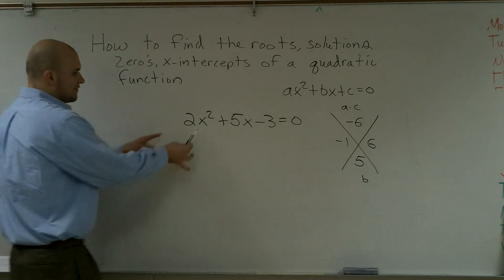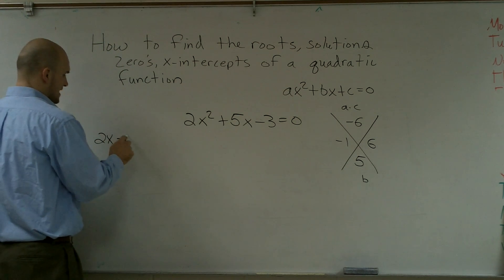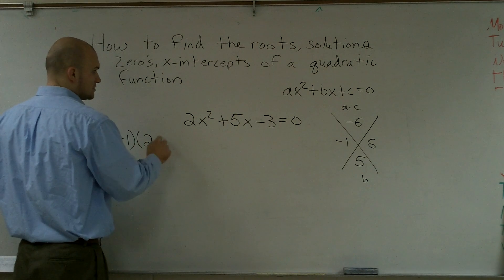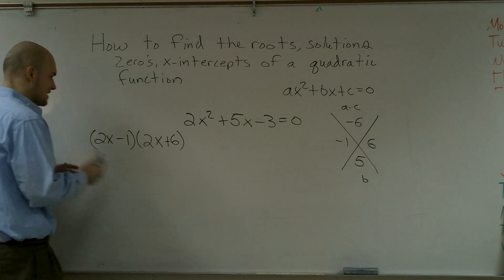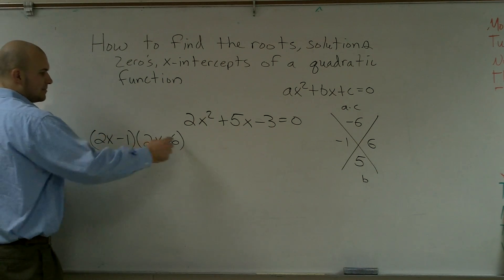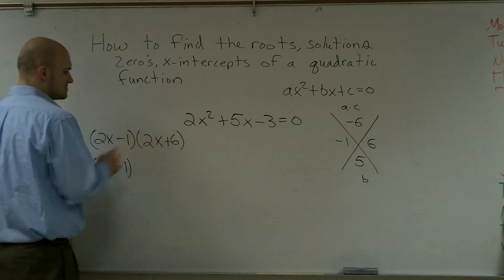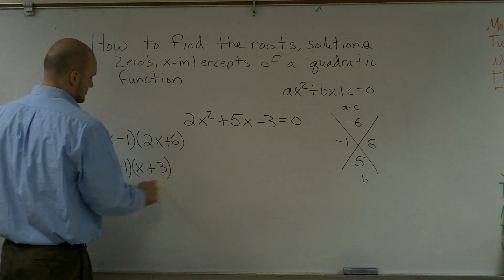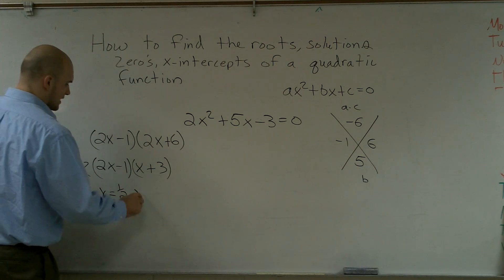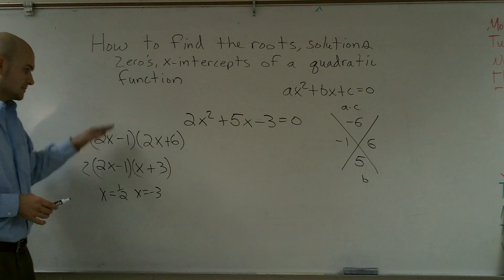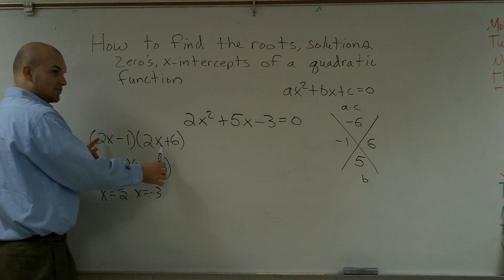The first way is we know our two factors are negative 1 and 6. All right, first way we can take our two front terms and I could write 2x minus 1 times 2x plus 6. Then from here I just factor out what terms they have in common. So here I can't pull anything out, but here I can pull out a 2. So I'm left with 2x minus 1 times x plus 3. So therefore I have x equals one half and x equals negative 3. That's the first method.